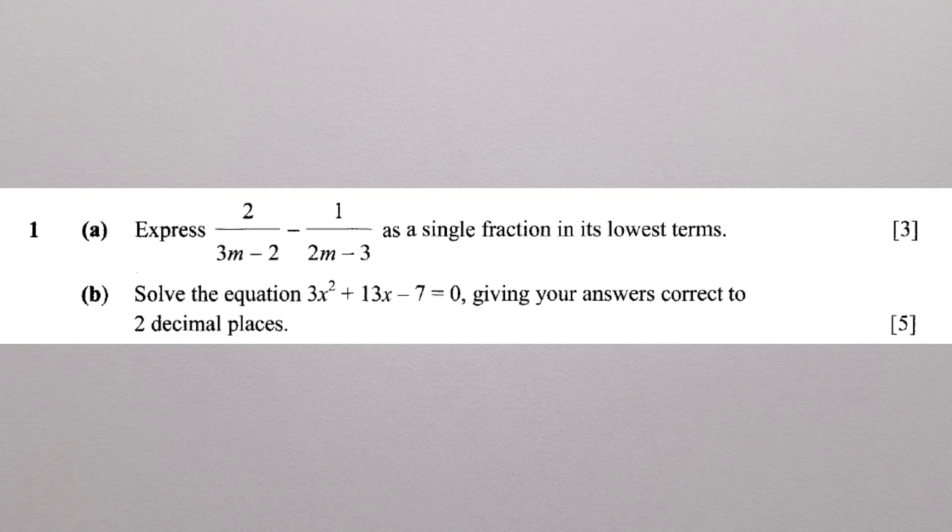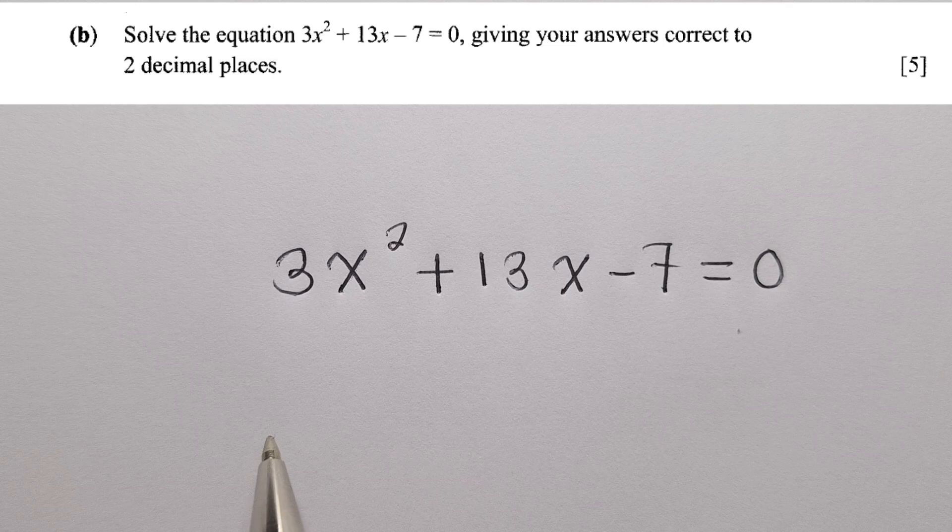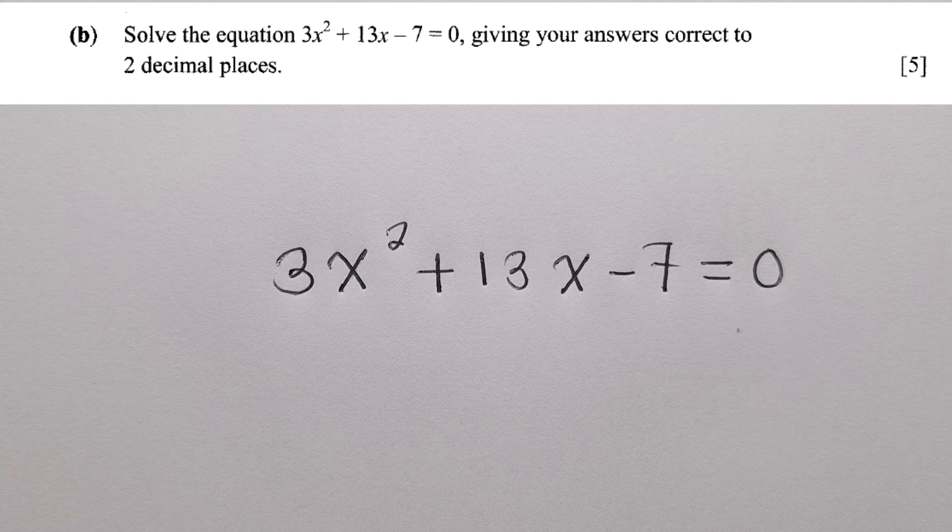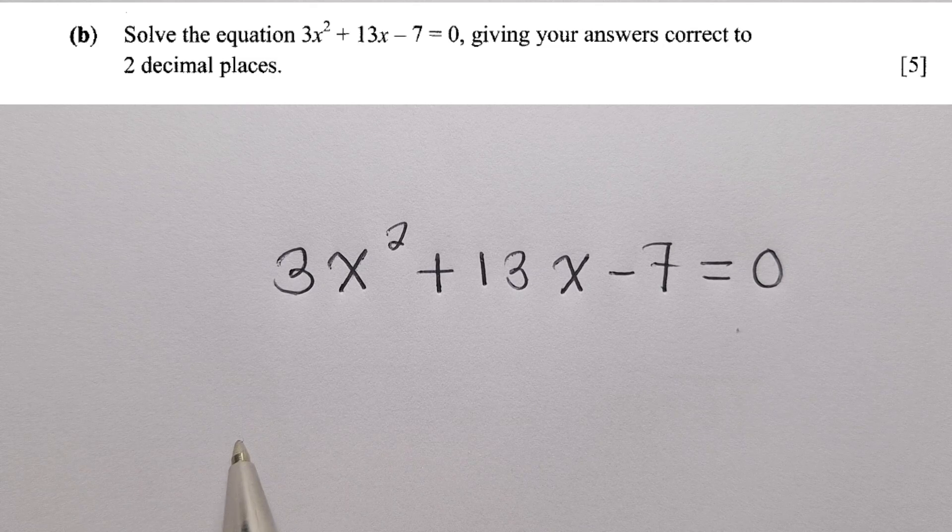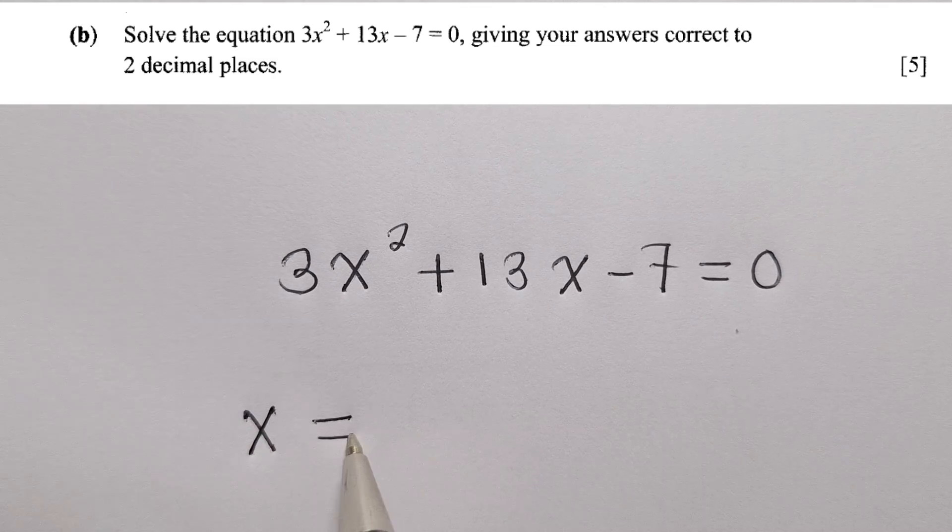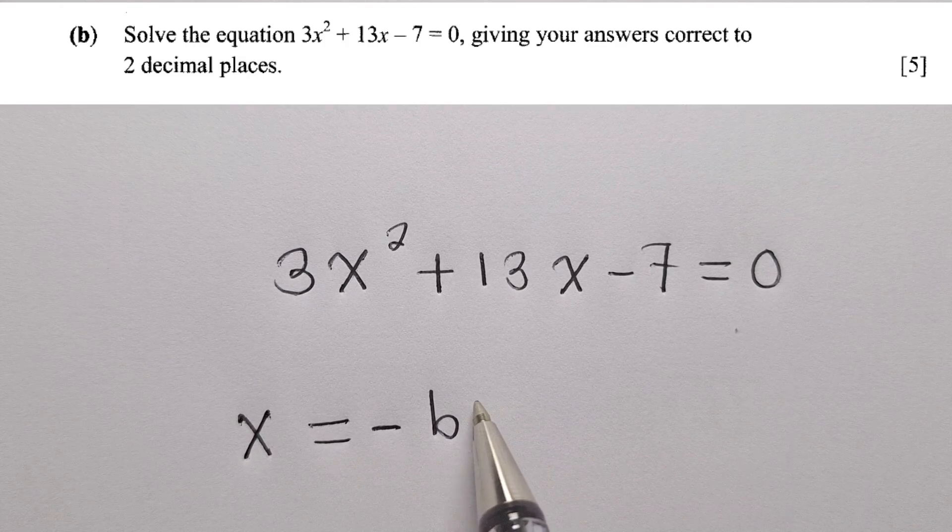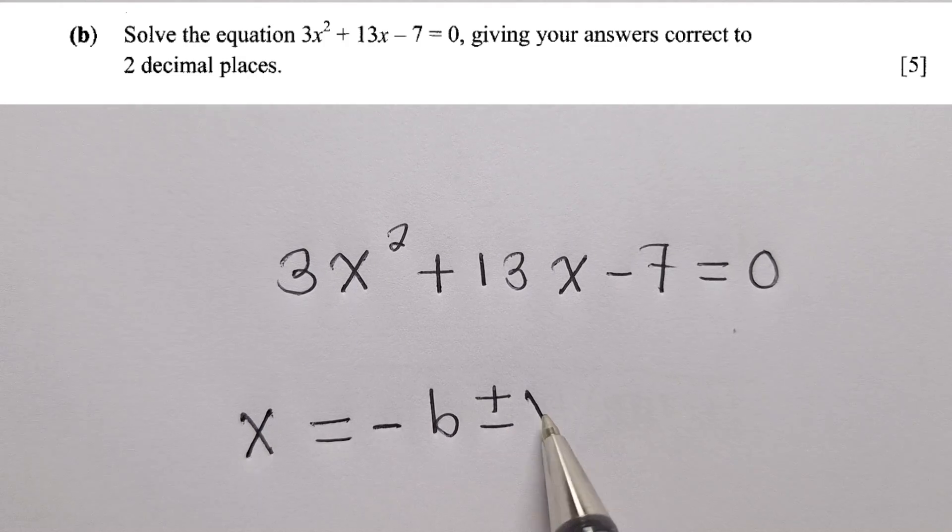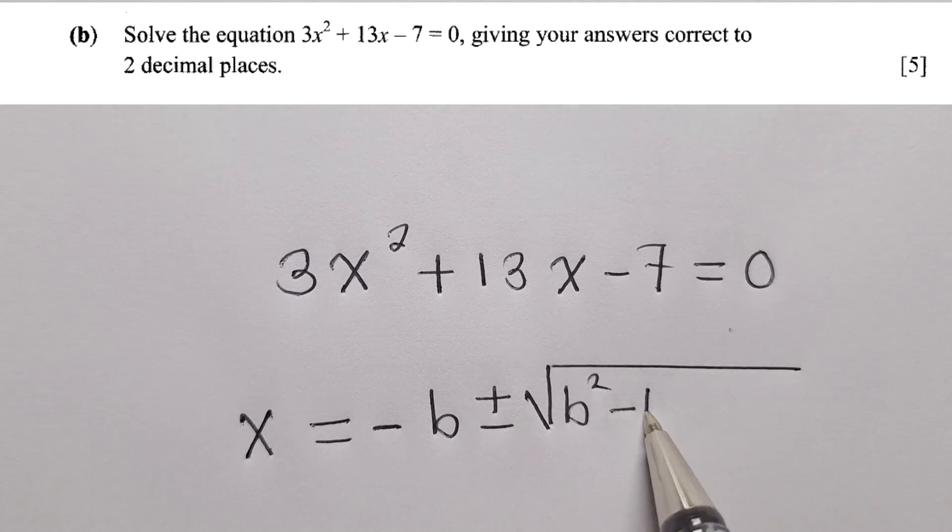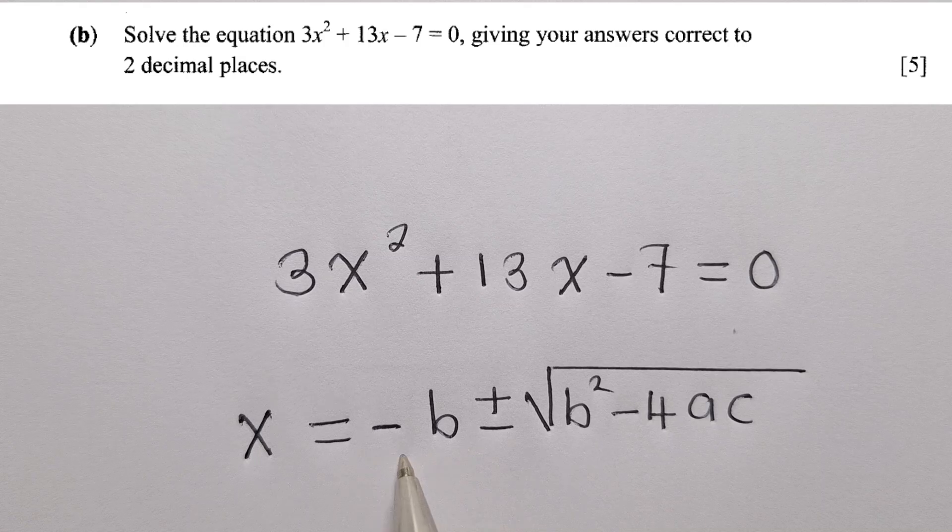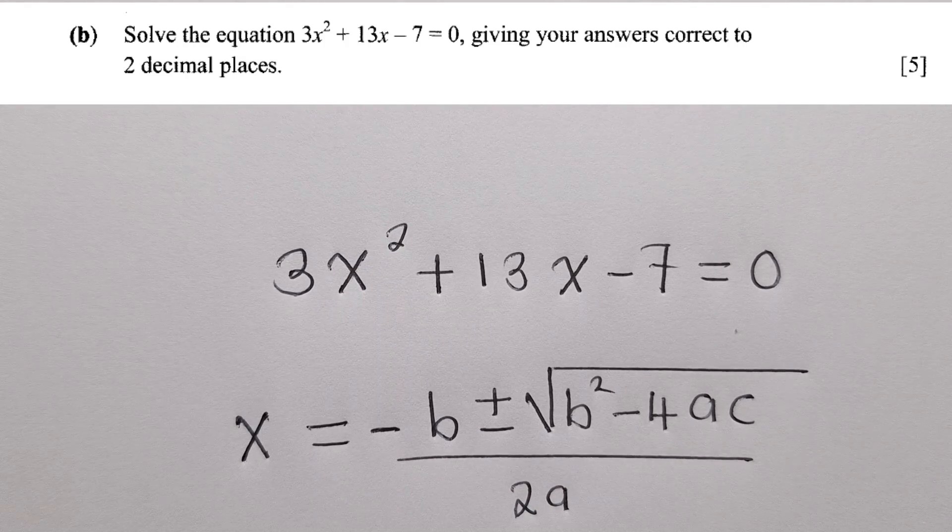Okay, so for this other question, question 1b, we need to use a quadratic formula because we've not been restricted which method we're supposed to use. We shall say x is equal to negative b, plus or minus square root over b squared minus 4ac over 2a. So this is the formula we need to use.